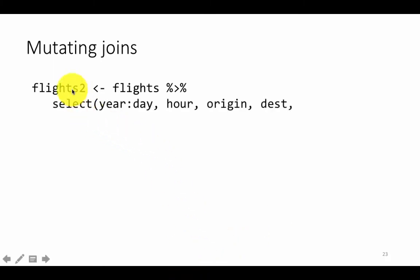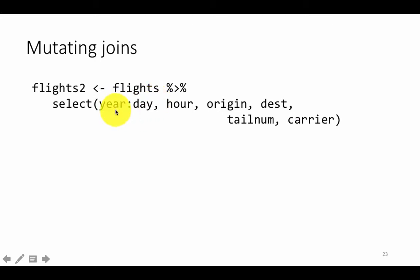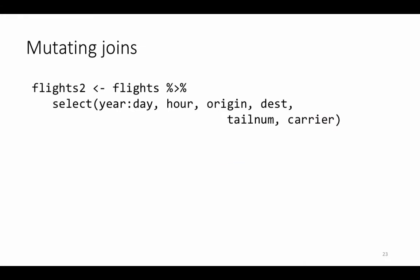So you may say select from the flights table. We are just selecting some of the columns — from year to day, which would be year, month, day, plus the hour, origin, destination, tail number, and carrier. The flights table has many columns, and we are selecting only a subset. So flights2 is our smaller table with fewer columns, and we are doing this just for convenience.